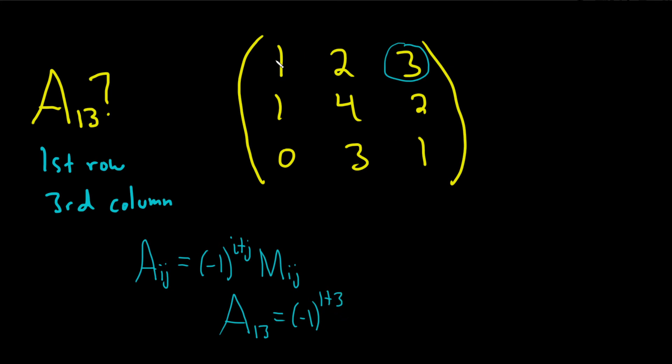So let's go ahead and do it. Let's cross out the row and column, and then you just take this determinant. That's this. So that would be 1, 4, 0, 3.